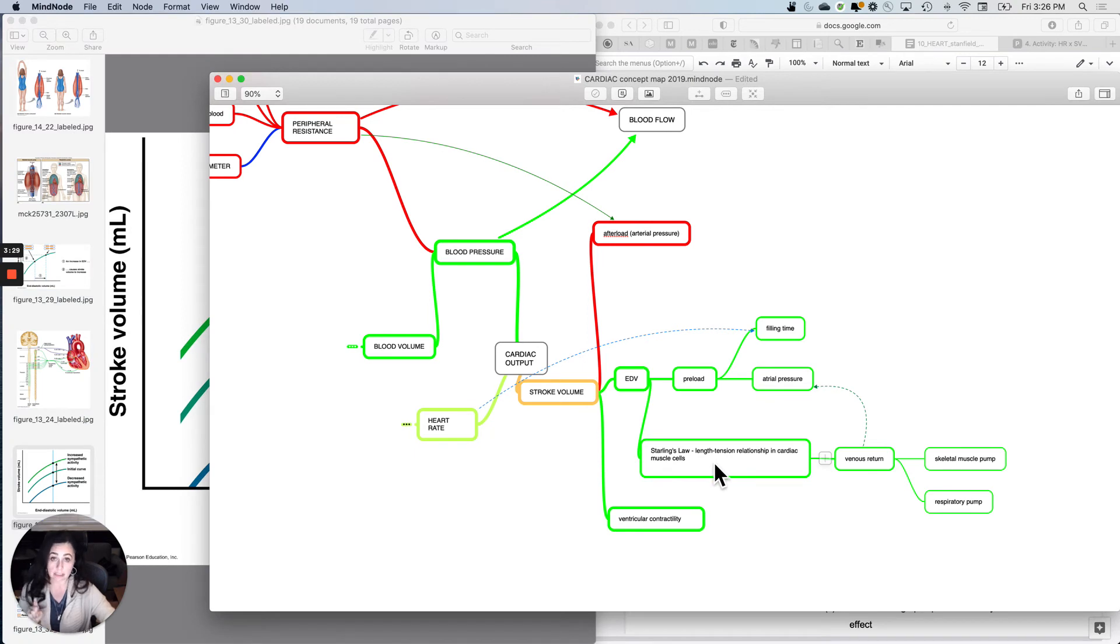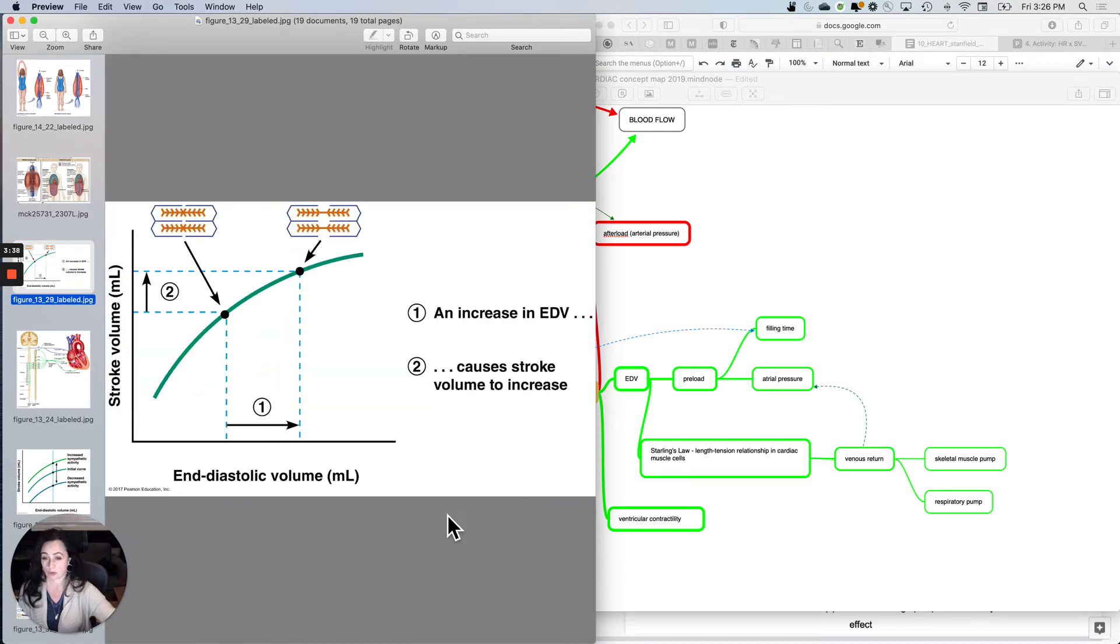So the difference between Starling's Law and ventricular contractility: this says more blood into the ventricles stretches those sarcomeres, more volume stretches sarcomeres, and you get a greater stroke volume.